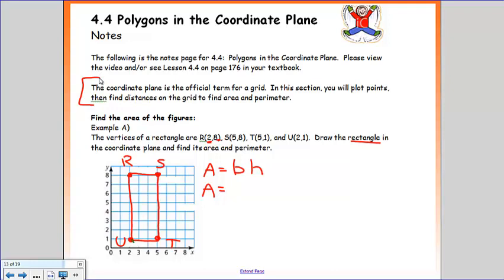Just like we practiced earlier, our base is the bottom in this case. It is 1, 2, 3, and my height is 1, 2, 3, 4, 5, 6, 7. So now I'm going to plug it into my math equation. Area equals 3 times 7. So therefore area equals 21 units squared.